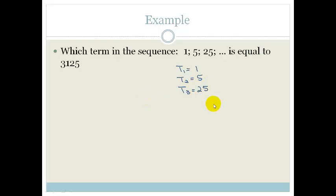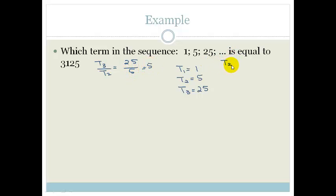I know this is a geometric sequence, but let's just check. Is there a common difference? 5 minus 1 is 4, but 25 minus 5 is 20, so this is definitely not an arithmetic sequence. Let's see if it's geometric: T3 over T2 is 25 divided by 5, which equals 5. And T2 divided by T1 is 5 divided by 1, which is 5. So we know this is definitely a geometric sequence.